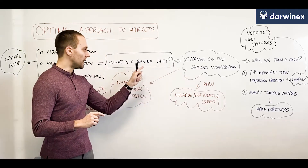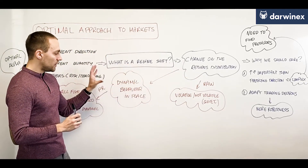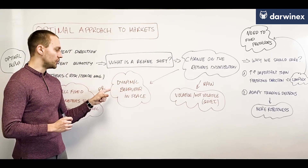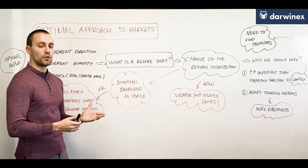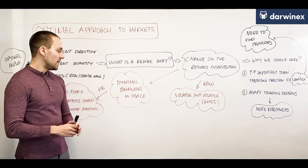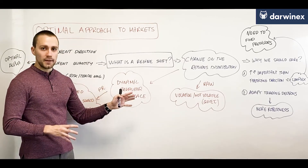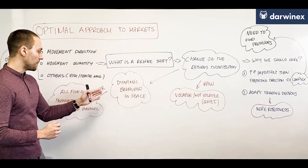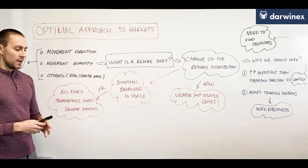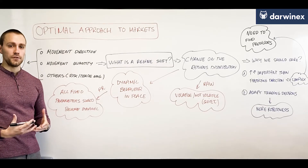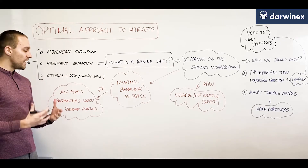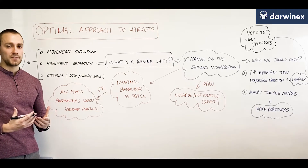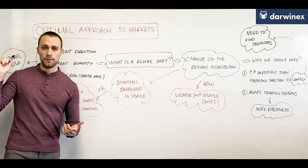Going back to our previous video — the change in the returns distribution clearly shows the dynamic behavior of markets in place. That's the practical aspect: as I said in the first video, many practitioners fix all the parameters in their models, and that's not the best approach to create that optimal alpha.